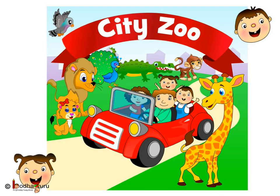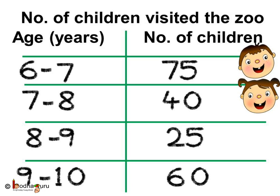On a particular Sunday, many children visited the city zoo. The zoo authorities collected data about the age of 200 children who visited the zoo on Sunday. Out of these 200 children, 75 children of age group 6 to 7 years visited the zoo.